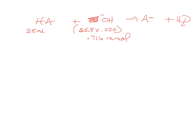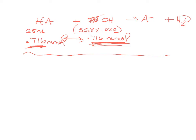At the equivalence point, the acid and base have neutralized each other, so the only thing present is the conjugate base of the weak acid and water. If this conjugate base were from a strong acid it would be too weak to affect pH, but since it's from a weak acid the conjugate base is stronger and can affect the pH.